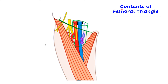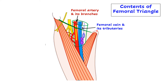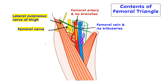Now for the contents of the femoral triangle. Given the name 'femoral,' we will have femoral artery and its branches, femoral vein and its tributaries, and femoral nerve. Besides these, we will also have two more nerves, making three nerves in total. From lateral to medial: lateral cutaneous nerve of thigh, femoral nerve and its branches, and the femoral branch of the genitofemoral nerve. This nerve pierces the deep fascia, reaches the superficial fascia, and supplies the skin over the femoral triangle.